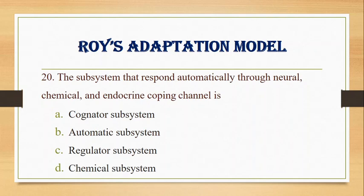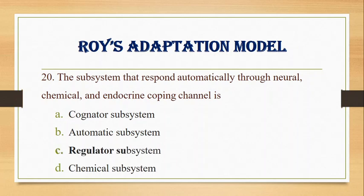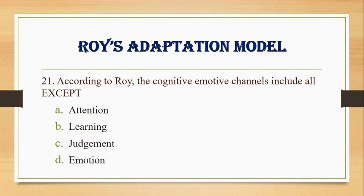Number 20. The subsystem that responds automatically through neural, chemical, and endocrine coping channels is: A. Cognator subsystem, B. Automatic subsystem, C. Regulator subsystem, D. Chemical subsystem. Answer: C. Regulator subsystem.